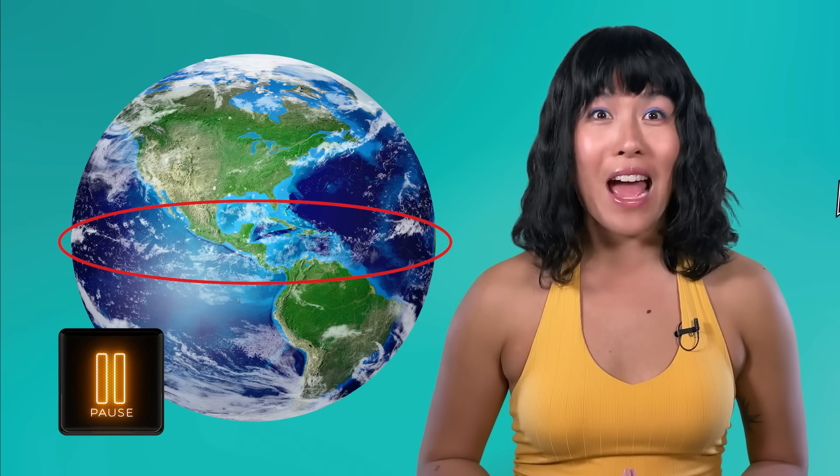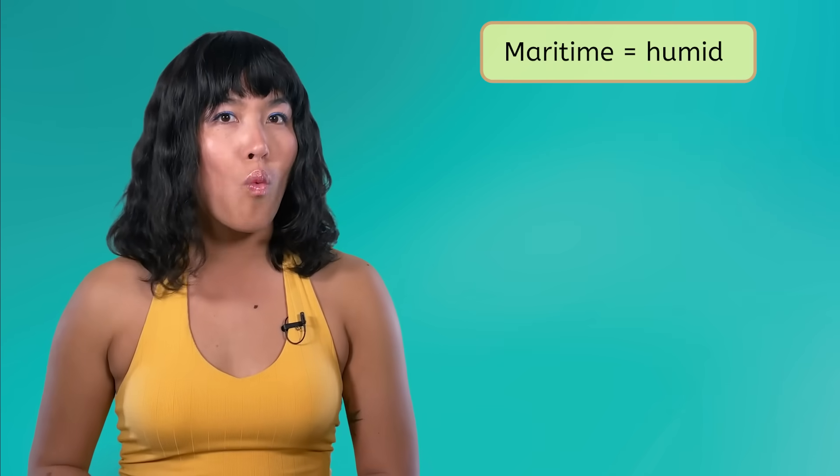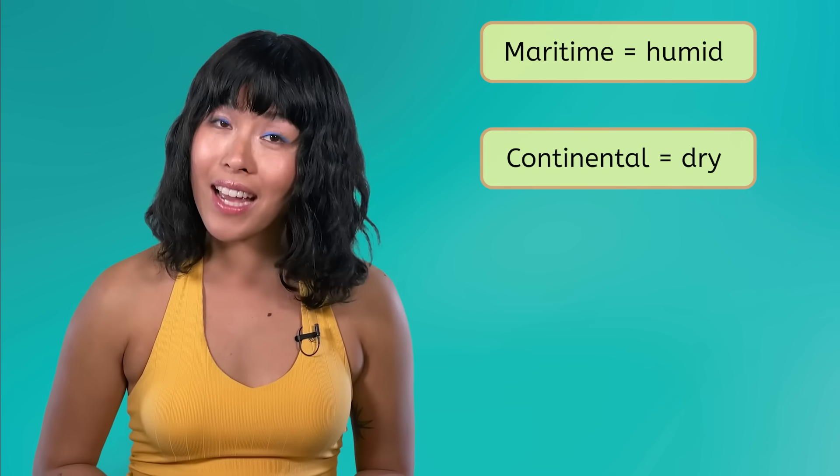Pause the video here and record your thoughts in your guided notes. Maritime air masses tend to be more humid while continental air masses tend to be more dry. So a maritime Arctic air mass would be cold and humid and may bring freezing temperatures and snow. On the other hand, a continental tropical air mass would be warm and dry and may bring clear skies and warm weather. Knowing where an air mass originated can help us predict the kinds of weather it will cause.